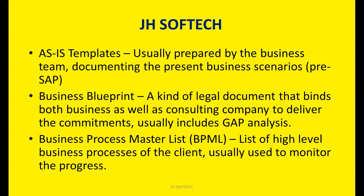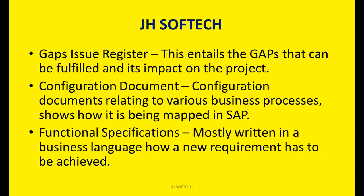The BPML — Business Process Master List — is a list of high-level business processes of the client, usually used to monitor progress. We document all the client's business processes, such as finance and HR departments. The Gaps Issue Register entails the gaps that can be fulfilled and their impact on the project, registering all gaps identified during the As-Is and To-Be documentation.